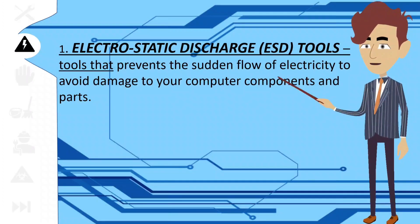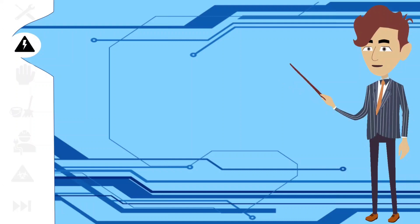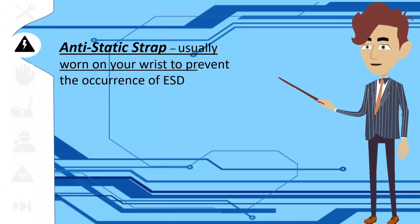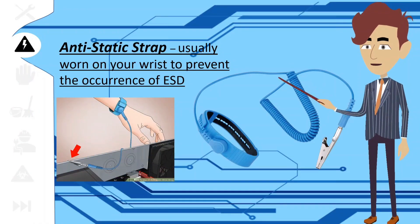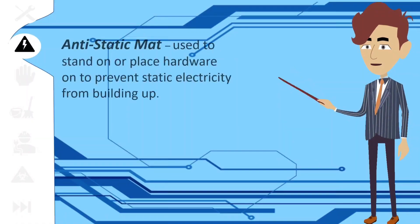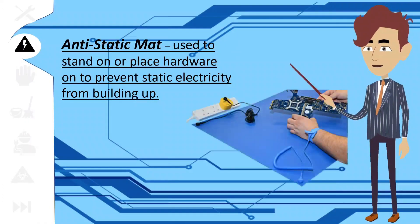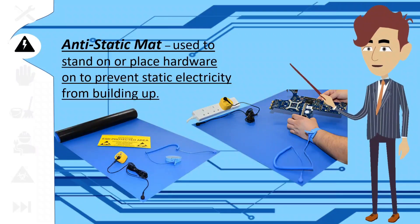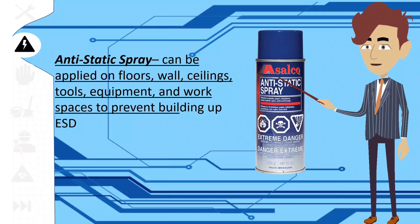These tools prevent the sudden flow of electricity to avoid damage to your computer components and parts. The following are the different classifications of ESD tools. One, anti-static strap — usually worn on your wrist to prevent the occurrence of ESD. Anti-static mat — used to stand on or place hardware on to prevent static electricity from building up. Anti-static spray — can be applied on floors, walls, ceilings, tools, equipment, and workspaces to prevent building up of ESD.